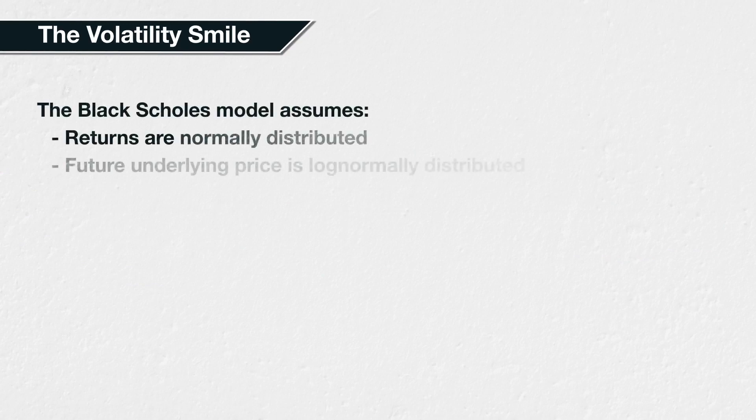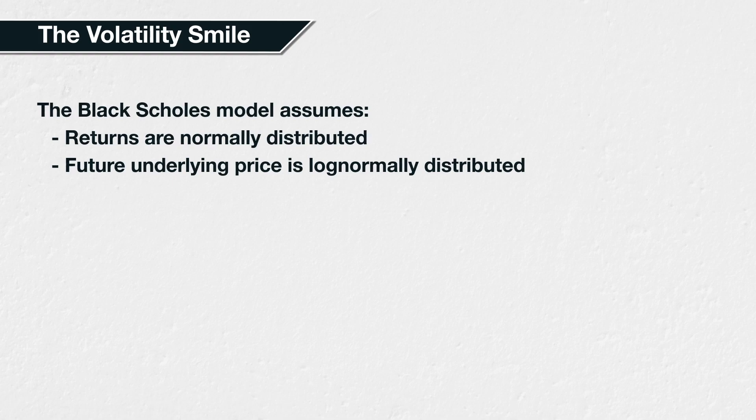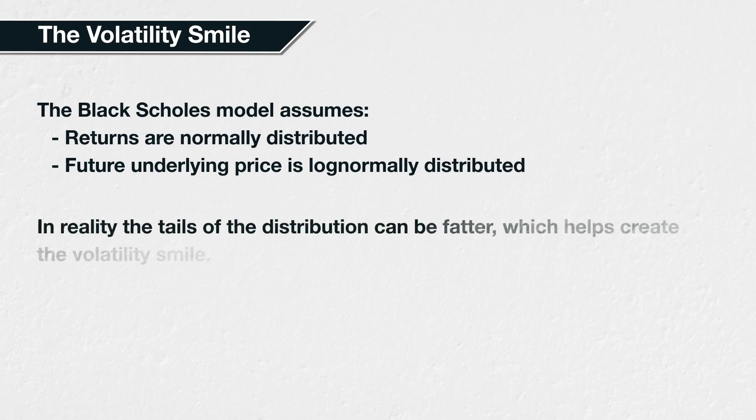One of the main assumptions of the Black-Scholes option pricing model is that the returns of an asset or stock are normally distributed, and that the future underlying prices therefore are lognormally distributed. In reality, the extremes, or tails, of the distribution curve are often fatter than a normal distribution would suggest, meaning extreme moves happen more often than a normal distribution would predict. This leads to something called the volatility smile.